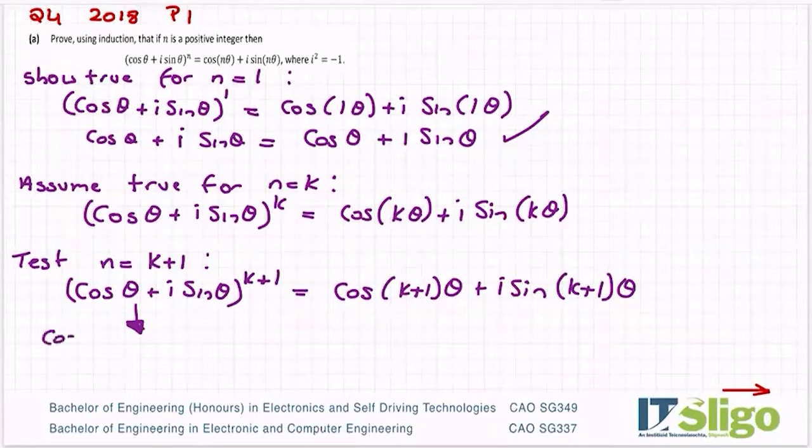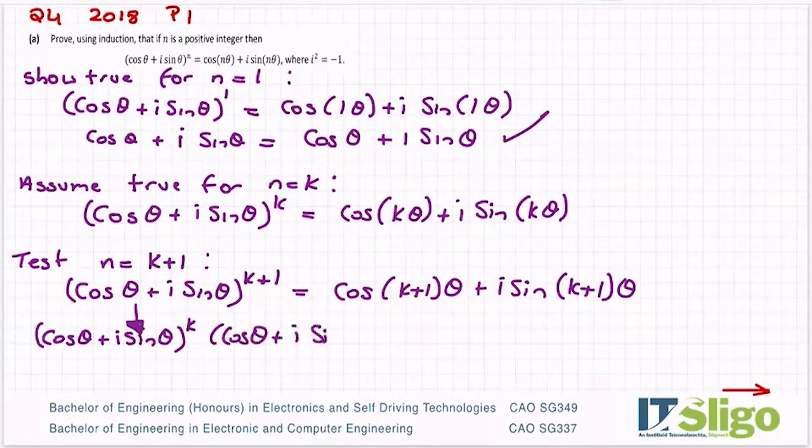So what does that mean here? Well, it means I can write this as cos theta plus i sine theta to the power of k. And I can also write cos theta plus i sine theta to the power of 1. So that's just using the rules of indices and then you'd add the powers. Keep the base number and add the powers.